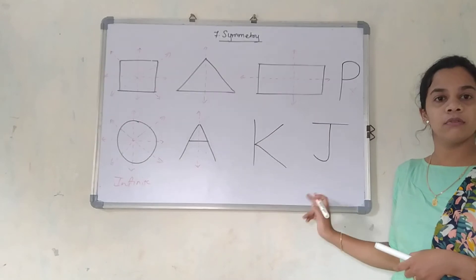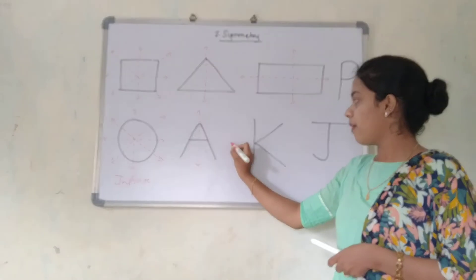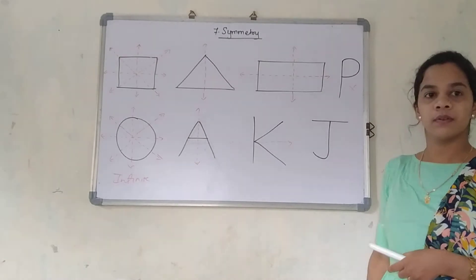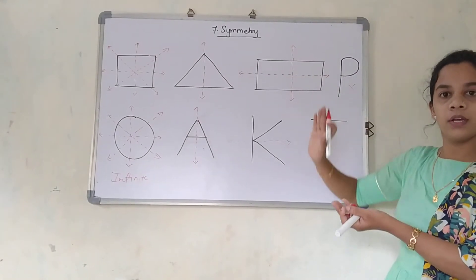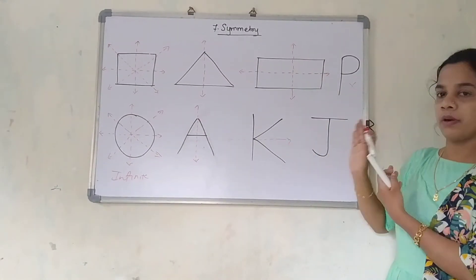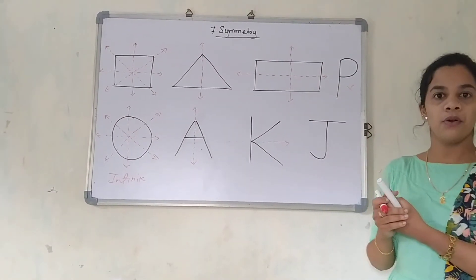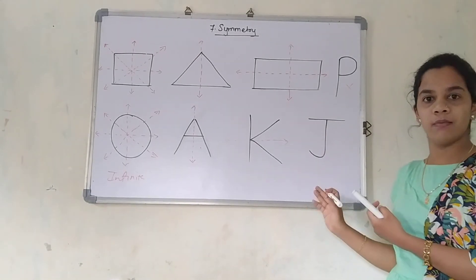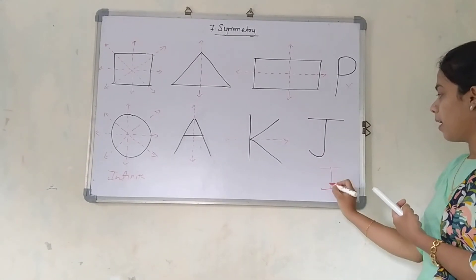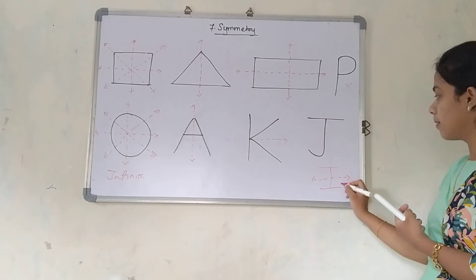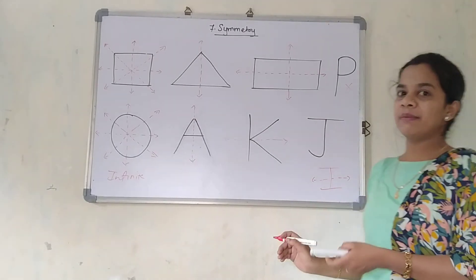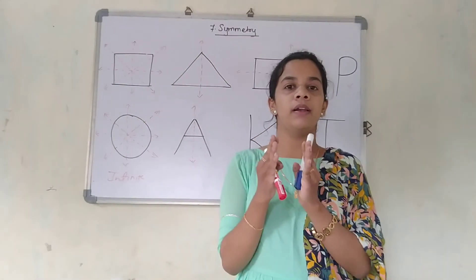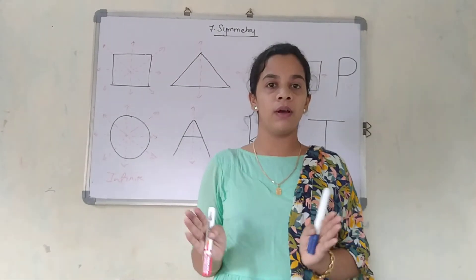Here you can see K. K is also a symmetrical object. If I divide it from here, the two parts are equally divided. So this is also a symmetrical object. Is J symmetrical? No. If you see the J shape, it is not symmetrical. Now you can see I. I can divide it like this. So symmetrical objects means — if you draw an axis of symmetry, it divides it into equal parts.